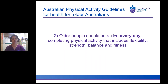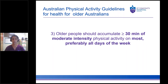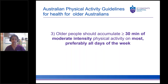The second point is that older people should be active every day, completing physical activity that includes a range of activities incorporating flexibility, strength, balance, and fitness. Thirdly, older people should accumulate at least 30 minutes of moderate intensity physical activity on most, preferably all, days of the week. Moderate intensity means activity that makes your heart beat a little bit faster and may make you short of breath, but you should be able to comfortably speak in sentences.